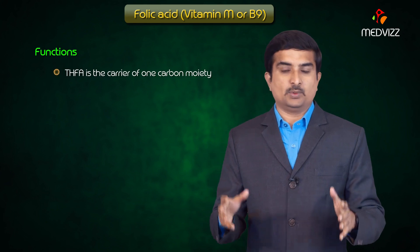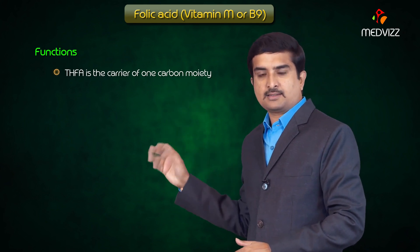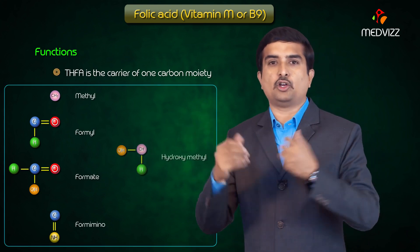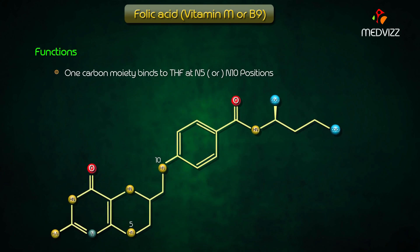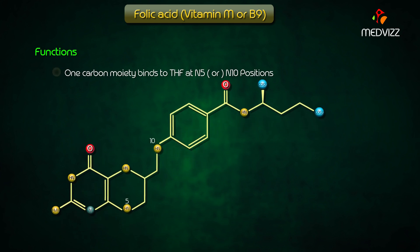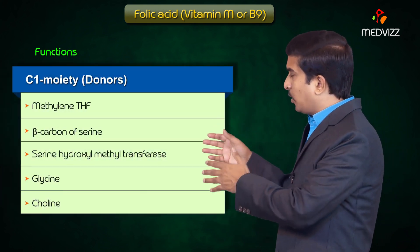Tetrahydrofolic acid, the active form of folic acid, is a carrier of one-carbon moieties such as methyl, formyl, formate, formamino, or hydroxymethyl groups. The one-carbon moiety binds to tetrahydrofolate at the N5 position, the N10 position, or sometimes both. N5 carries formyl, formamino, or methyl groups; N10 carries formyl; and N5–N10 together carry methylene or methenyl groups.